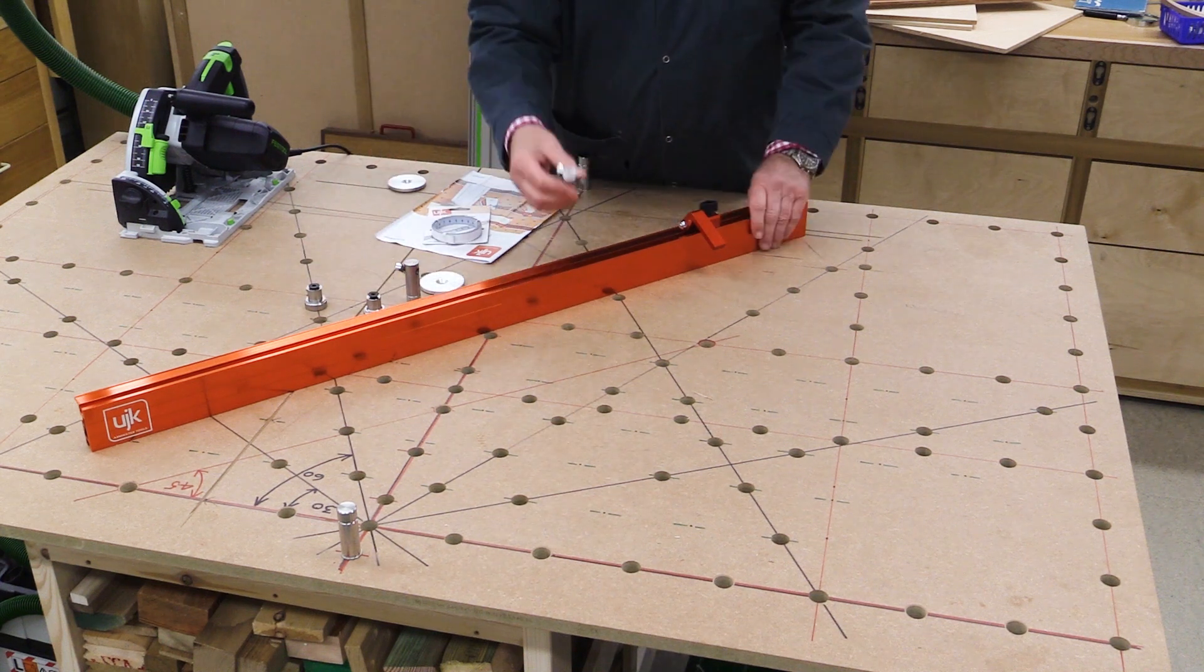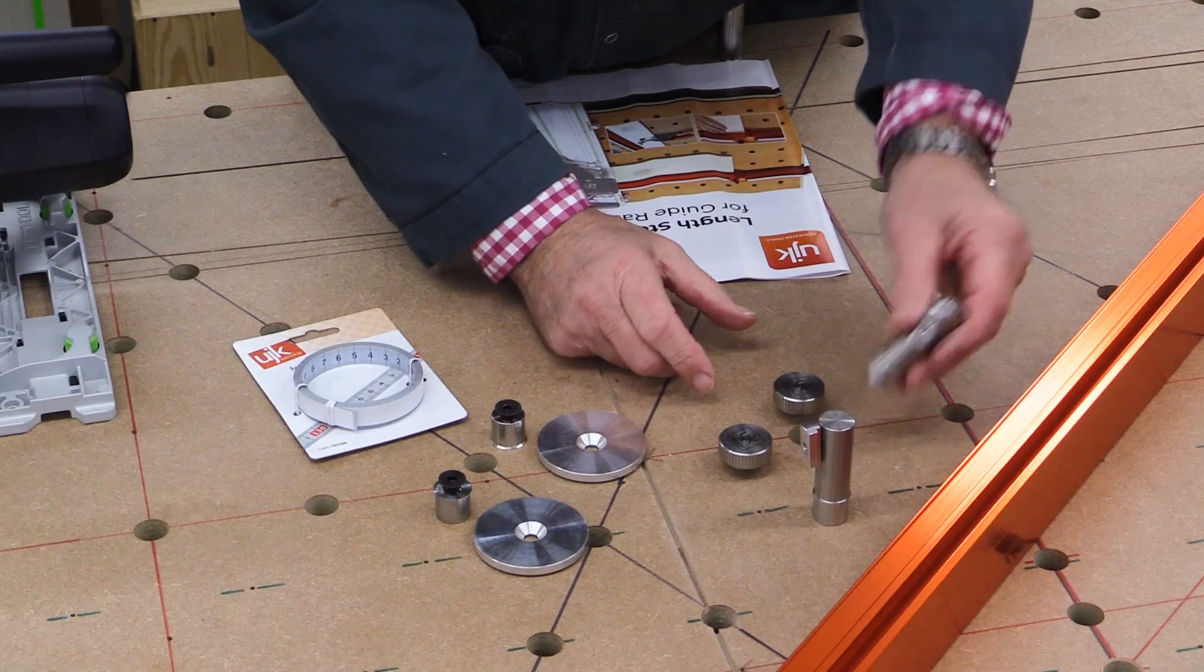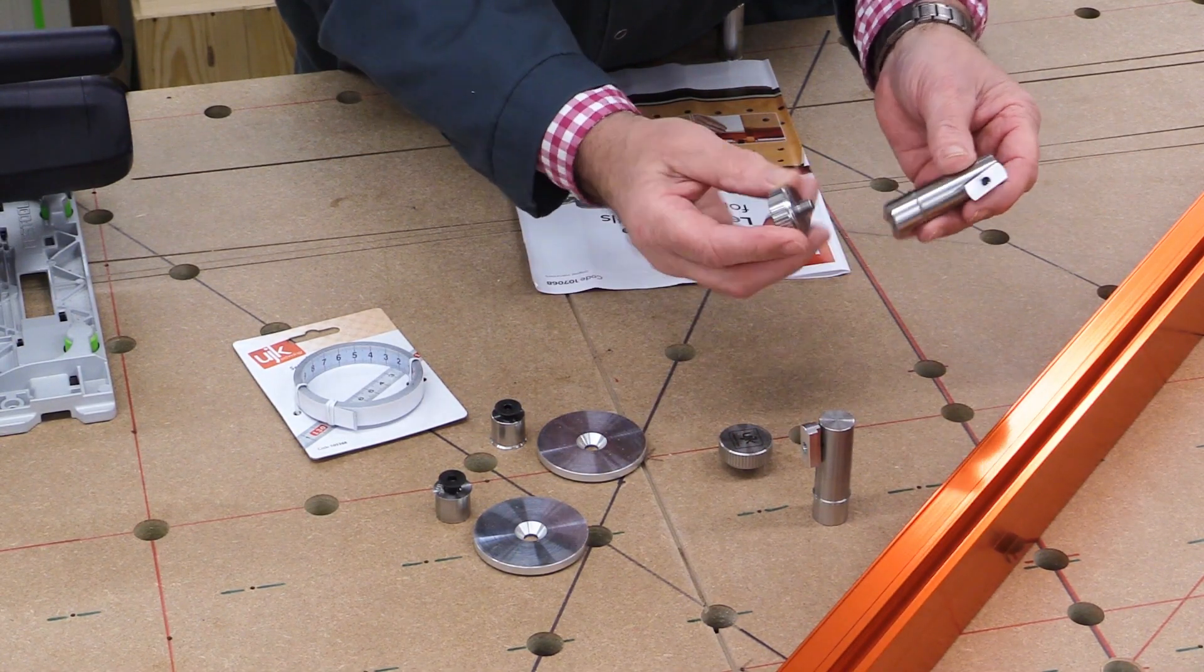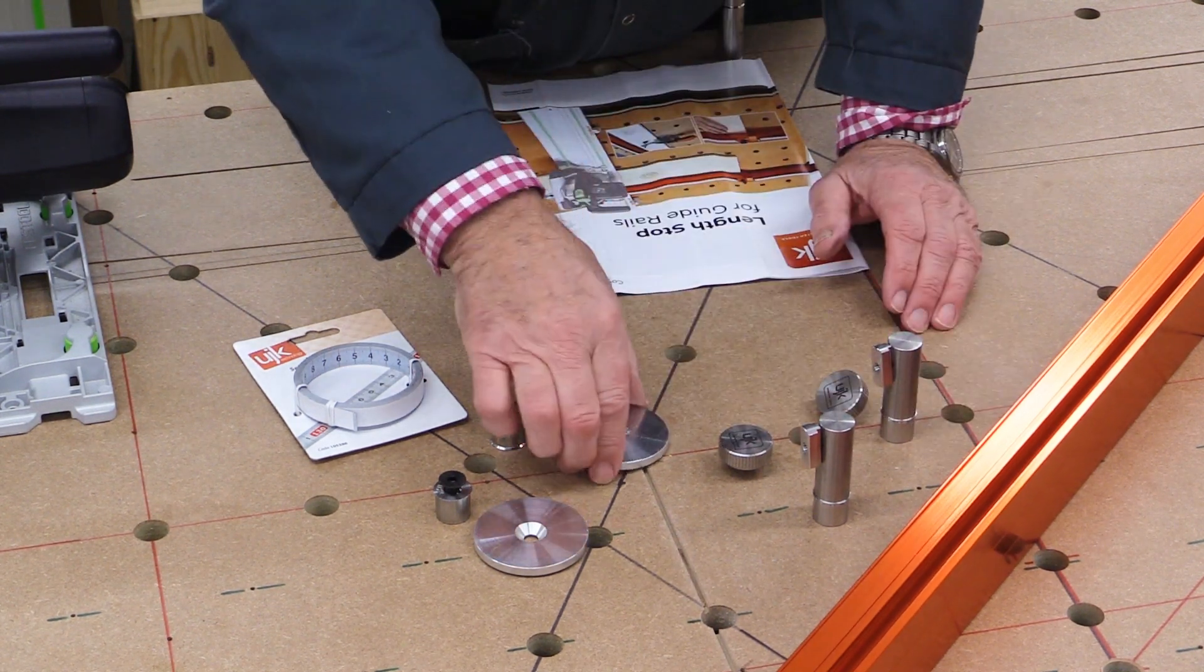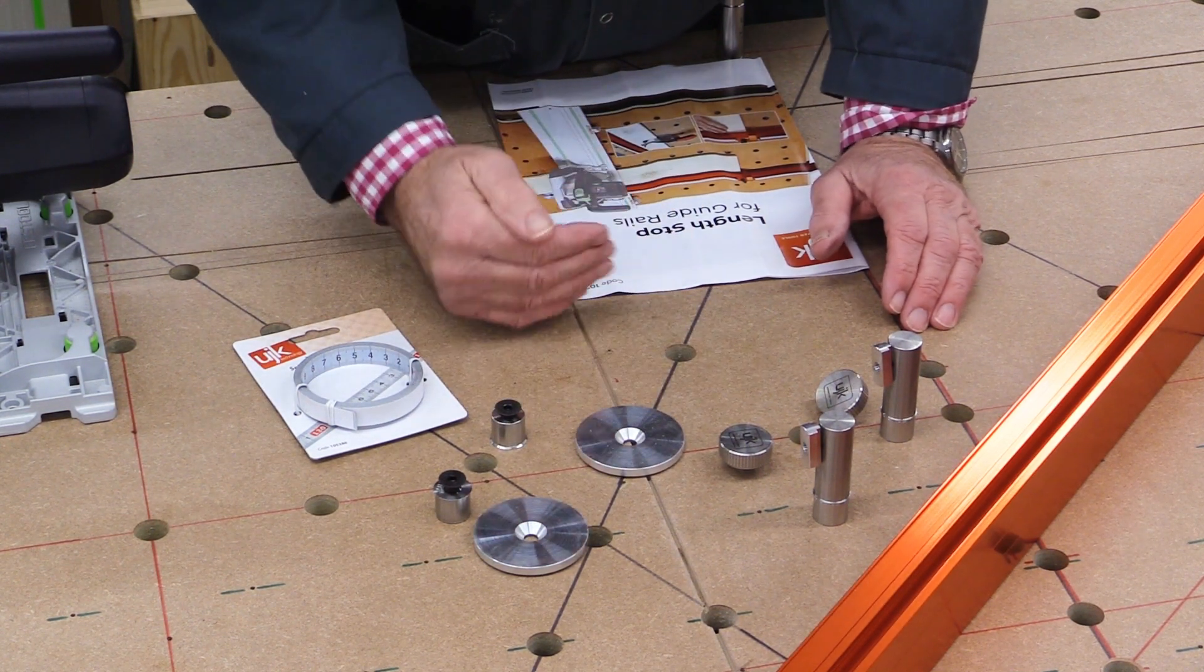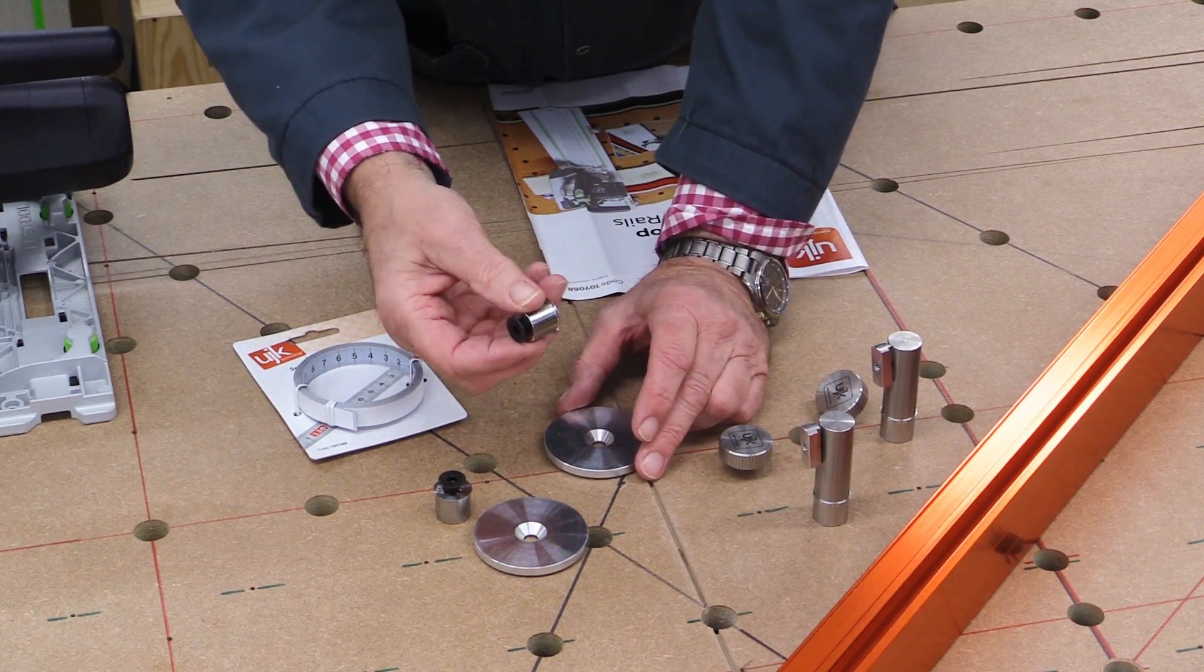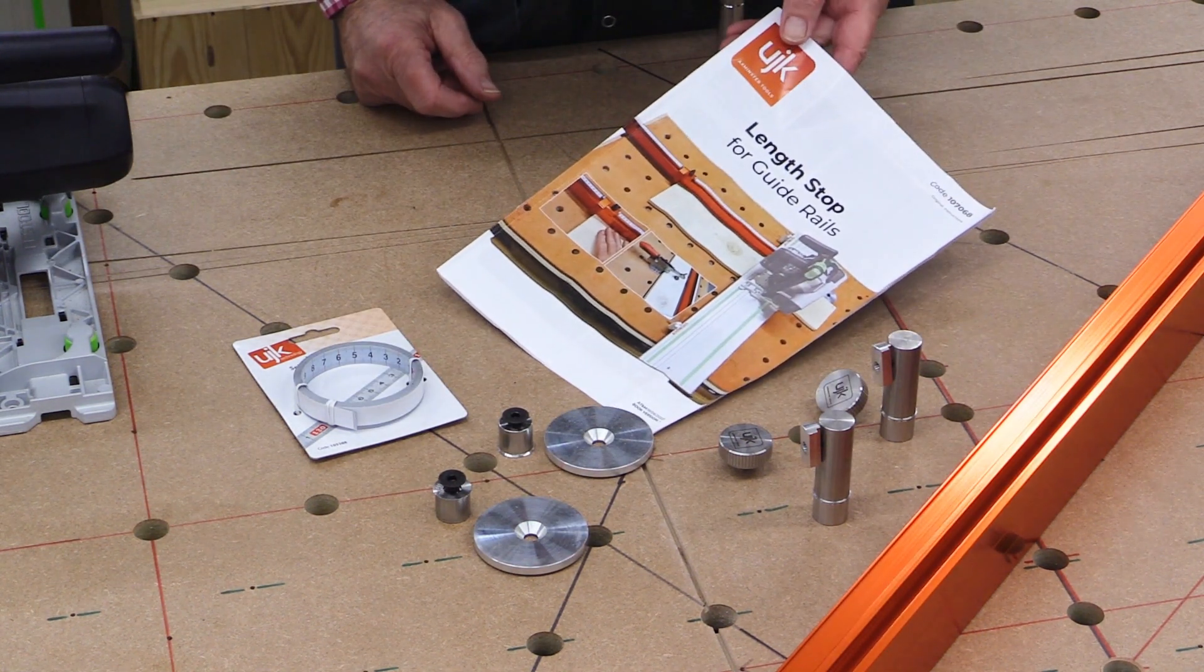There are a couple of special dogs which allow the rail to be fixed in place, these tall things here, and these special tall dogs are held in place from underneath with these little knobs. There are also a pair of discs here which are used for providing an extra bit of stop, and these are fixed in place with these low profile dogs. And of course you get a set of instructions.